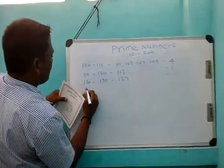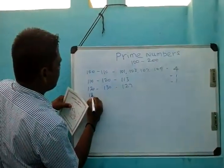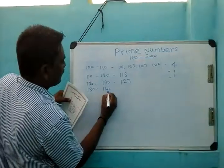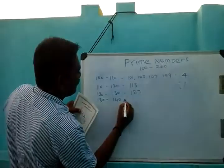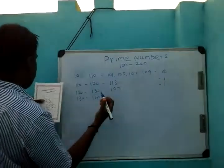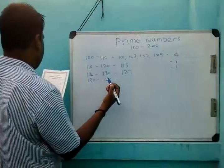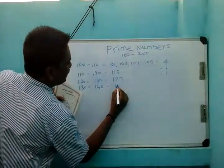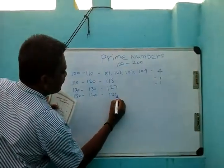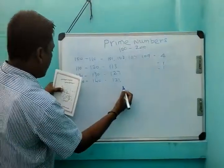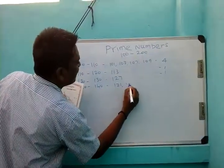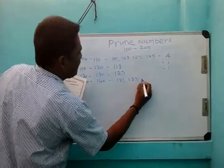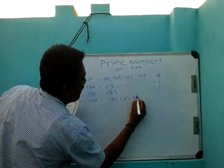From 130 to 140, if you have 10 numbers, you can see how many prime numbers there are. These are 131, 137, and 139.